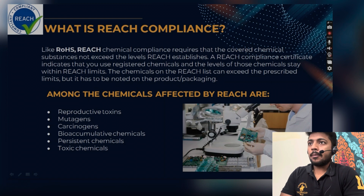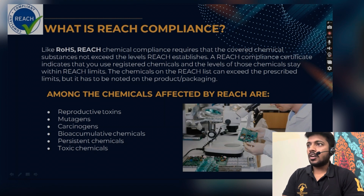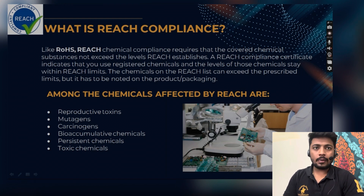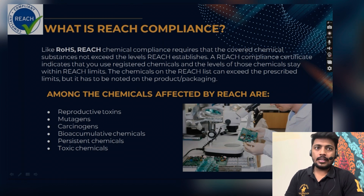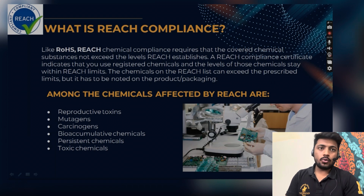Like RoHS, REACH chemical compliance requires that covered chemical substances do not exceed the levels REACH establishes. A REACH compliance certificate indicates that you use registered chemicals and the levels of those chemicals stay within REACH limits. Whatever chemicals or substances you are using during manufacturing of the product must not exceed the already defined limit. For example, if a chemical should be used at only 0.01% in a particular product, that limit should not be exceeded.